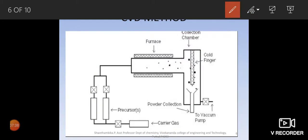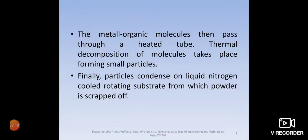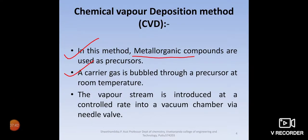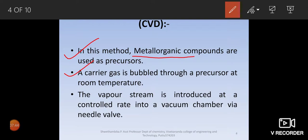I hope I reached you the synthesis. Let us once state it as sentences. In the first step, we take metalorganic compounds as precursors in one reservoir. Another reservoir, we take carrier gas and carrier gas is bubbled through the precursor. In the third step, the vapor stream we are introducing into a vacuum chamber via the needle valve to control where the reaction would happen.